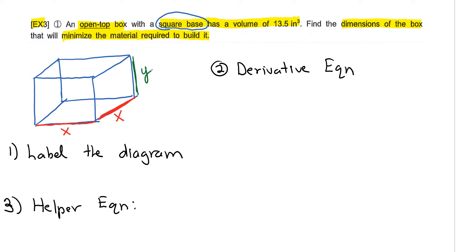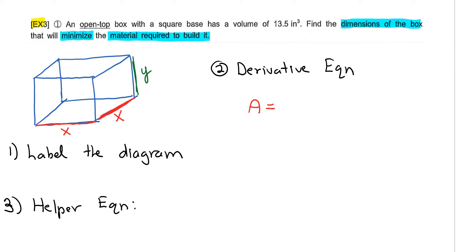For part two, you need to find a derivative equation. For the derivative equation, you want to take a look at the very last part of the problem — I want to find the dimensions of the box that will minimize the material required to build it. So if you're looking for the material required to build it, you want the material around the box, which is surface area. Surface area is finding the area of all the individual pieces and adding them up. There is a bottom piece, and the bottom is just a square, so the area is x times x, which is x squared. Then you have several sides.